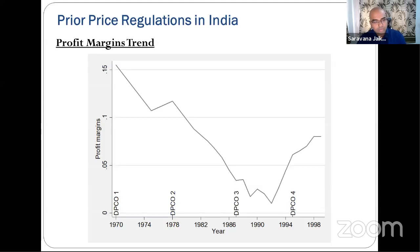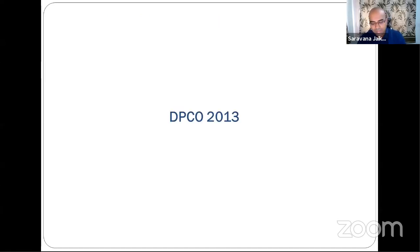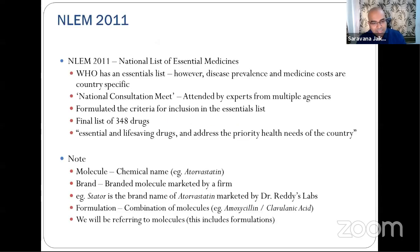Every prior price control order had a negative impact on profit margins. Only when the number of regulated molecules was drastically reduced did margins start recovering. Under DPCO 2013, a national consultation process established criteria for identifying essential medicines, producing a final list of 348 drugs across therapeutic classes — considered essential, life-saving, and addressing priority health needs.